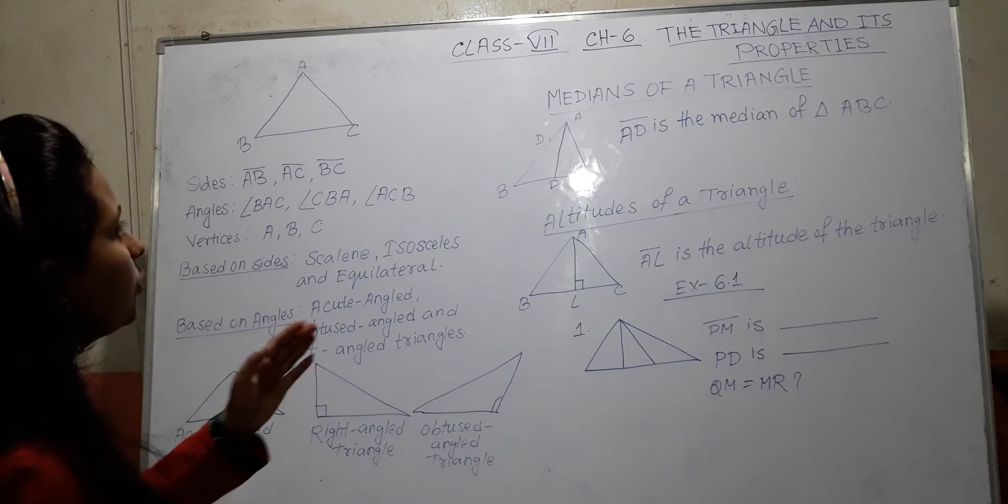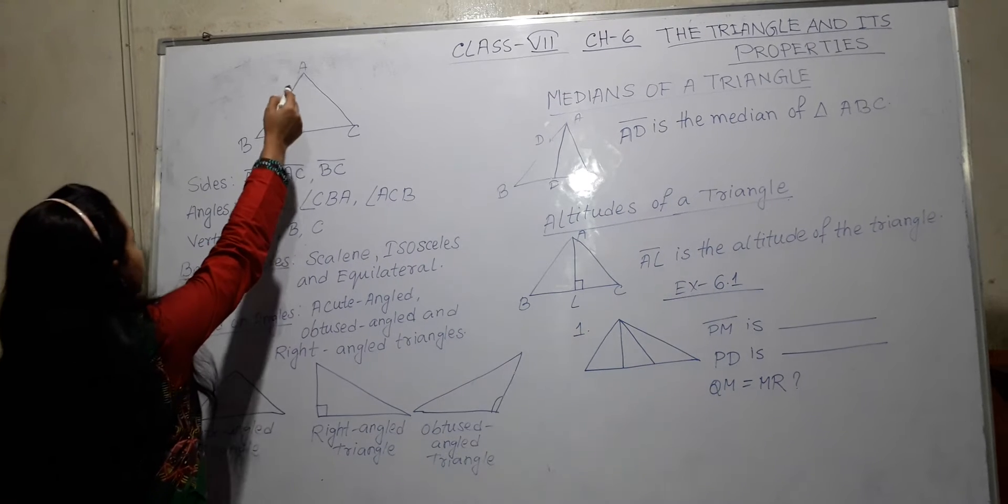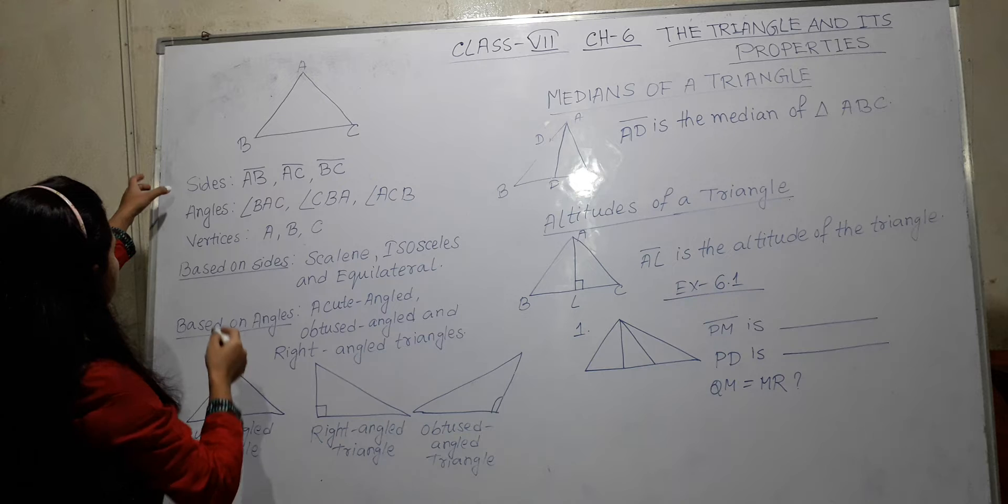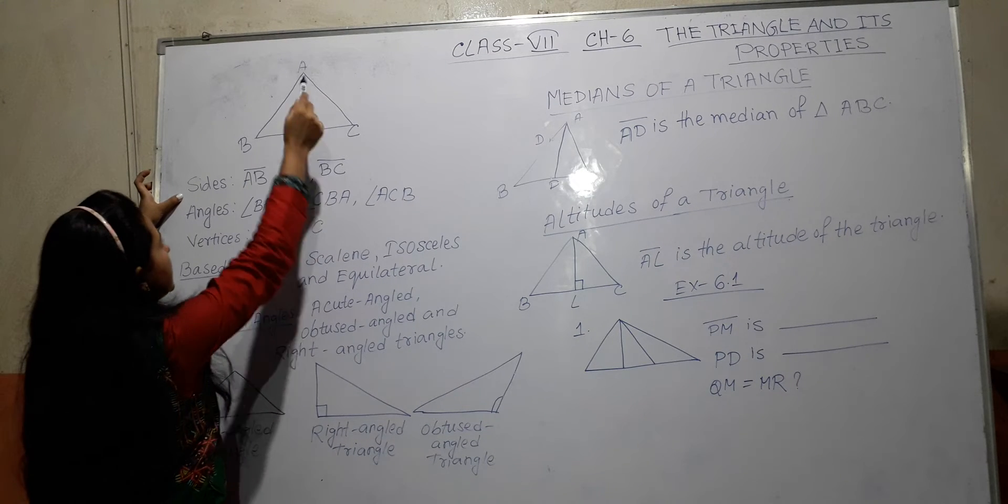So we know what is a triangle. Triangle has 3 sides and 3 angles and 3 vertices. This is called a triangle. We already know that. See this is a triangle ABC. There are 3 sides: side AB, BC, CA.